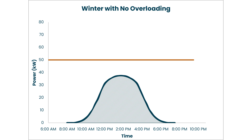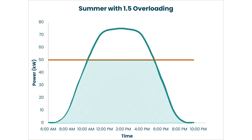Let's consider another example with a 1.5 DC to AC ratio. In the summer, on a perfect day, we can output 50 kilowatts now for 7 hours, hitting that 50 kilowatt limit sooner and maintaining it longer. This does result in significant what we call clipping, which is the unused energy above the inverter's capacity — essentially lost energy.